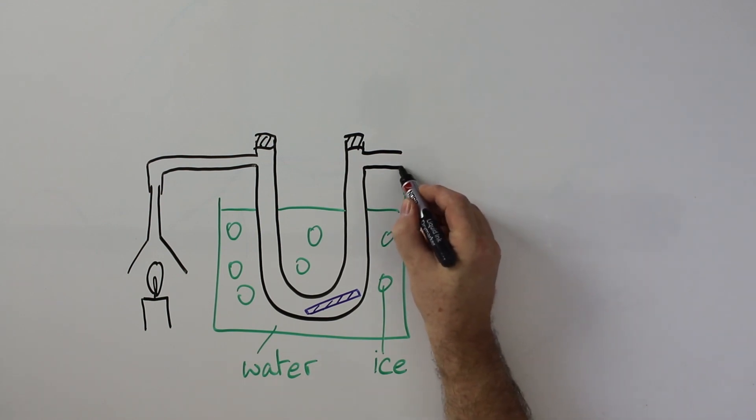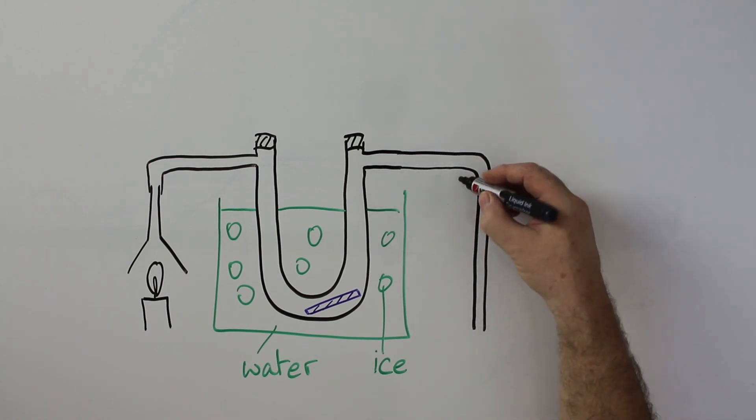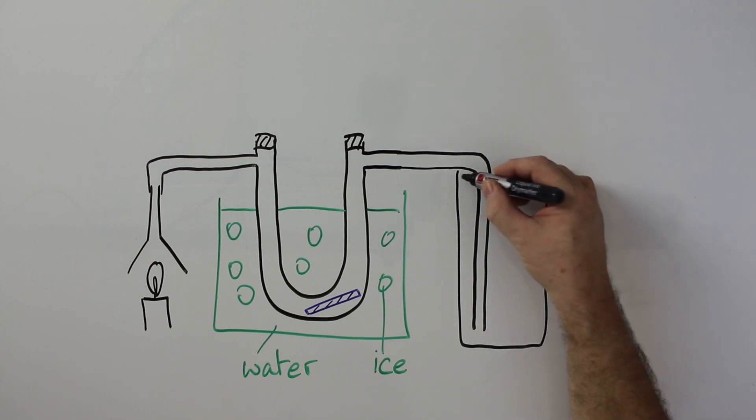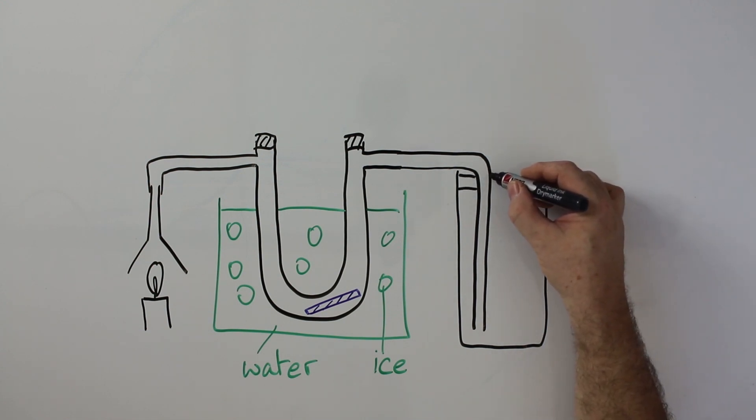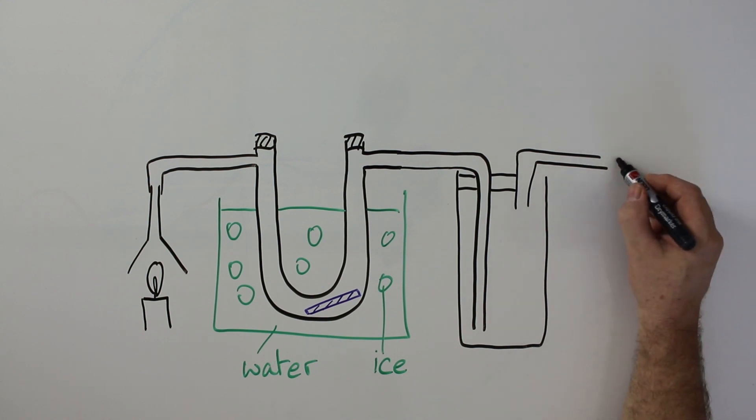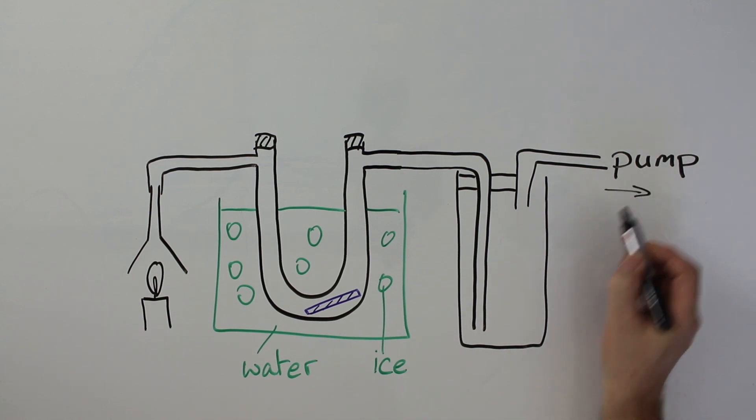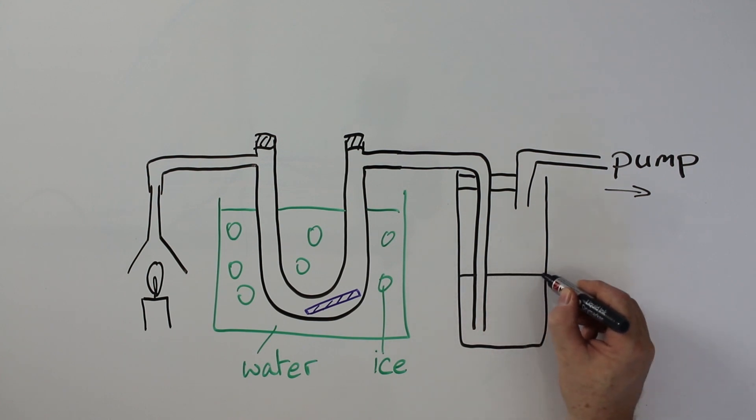From here we're going to take this into another bottle and that's going out to a pump which is going to suck the air through. And in here we've got some lime water. The lime water is a test for carbon dioxide. So let's look what happens.